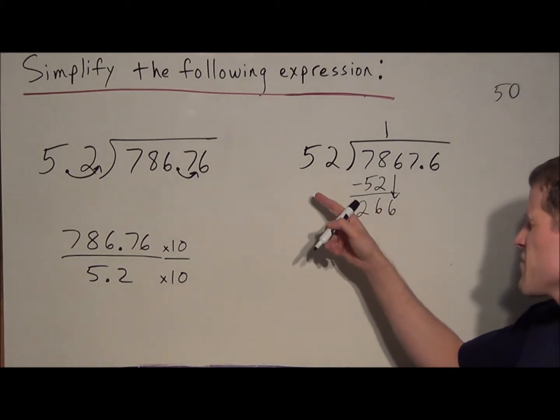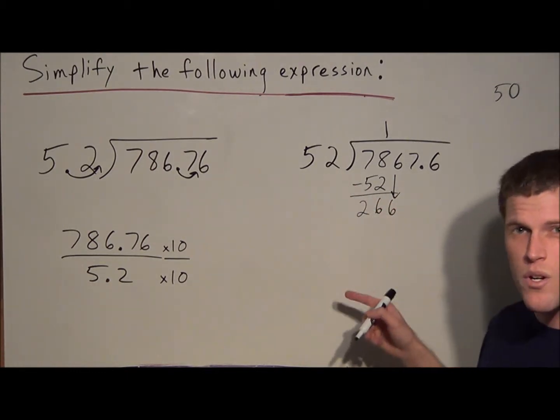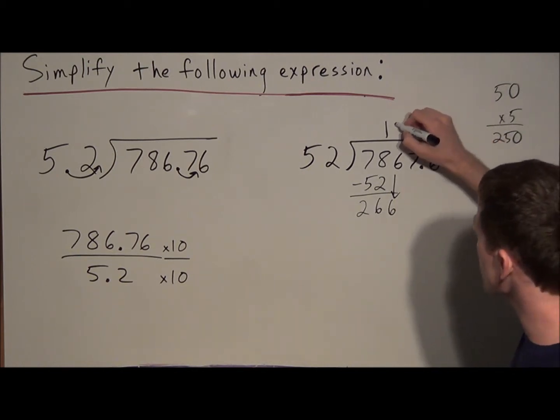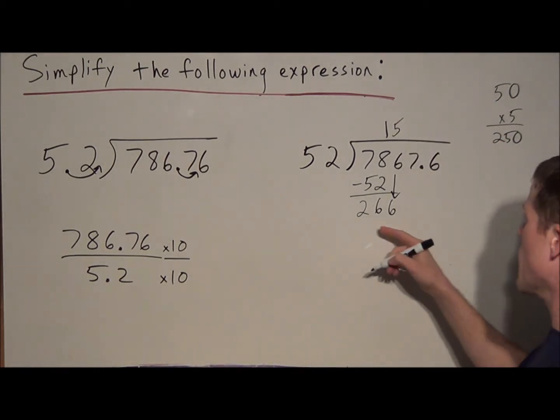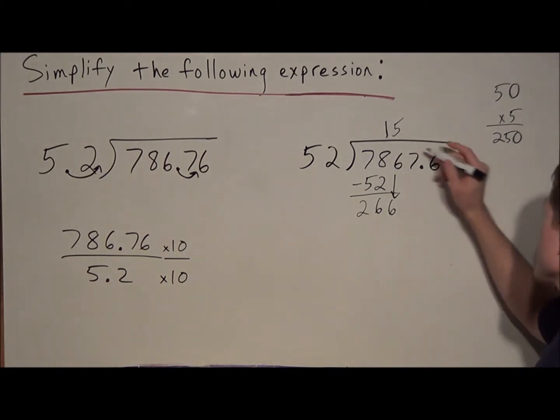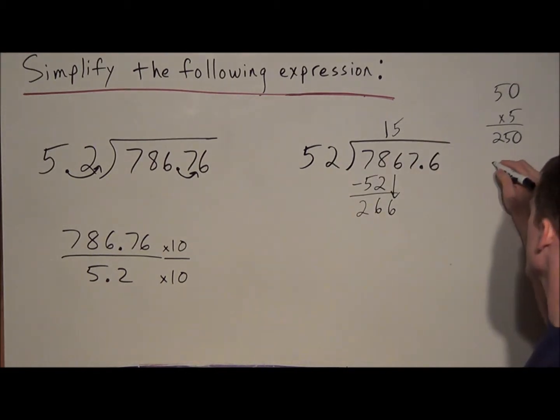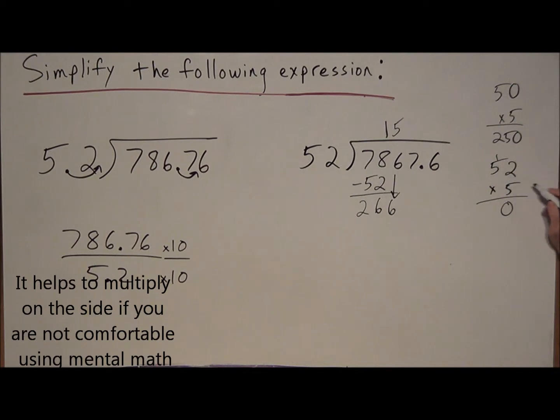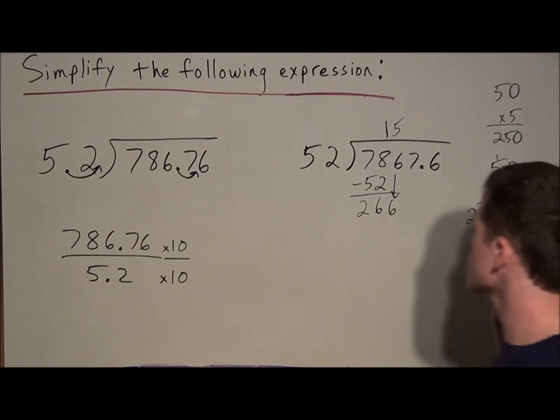If you think in terms of 5s, 5 times 5 is 25, so 50 times 5 would be 250. So if we pick 5, we know that's going to bring us as close as possible to 266. And multiplying 52 times 5, we multiply this out, 5 times 2 is 10, carry the 1, 5 times 5 is 25, plus 1 is 26, we're going to get 260.